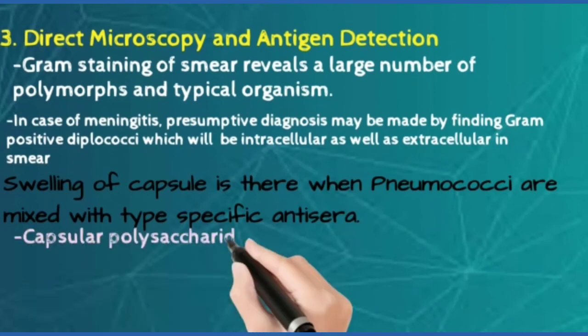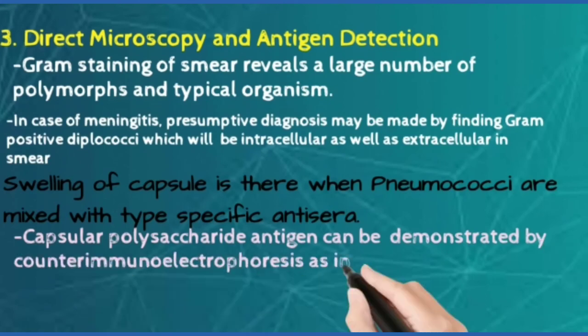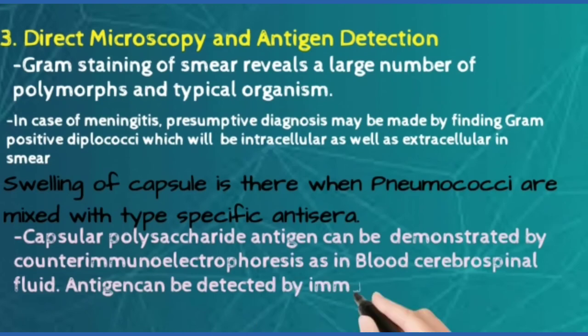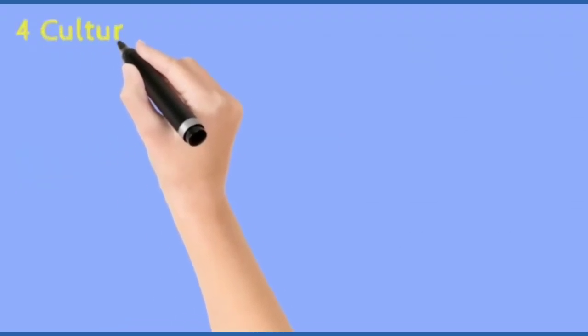Capsular polysaccharide antigen can be demonstrated by counter-immunoelectrophoresis in blood and cerebrospinal fluid. Antigen is detected by immunochromatographic assay, latex agglutination, or coagglutination.